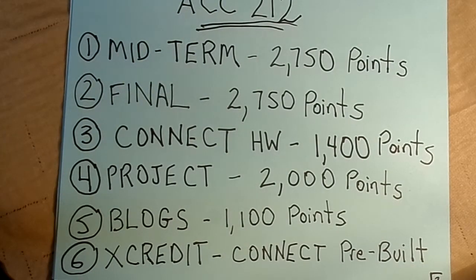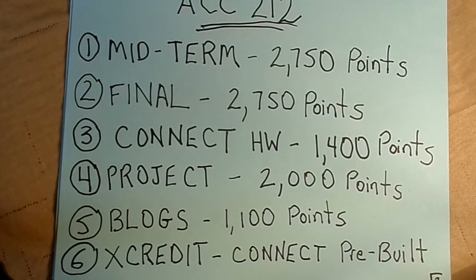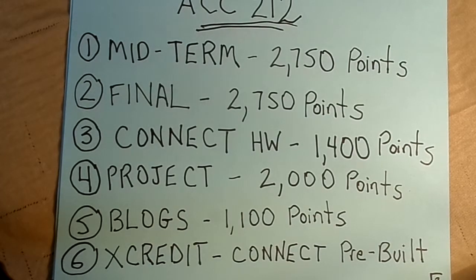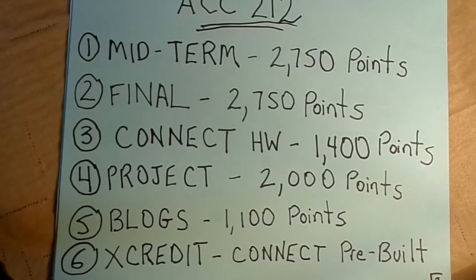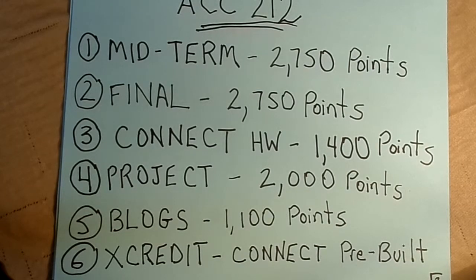Here's what the grades come from: the midterm exam is worth 2,750 points, the final exam is worth 2,750 points, and the Connect homework — a chapter-by-chapter assignment, sometimes two per week — adds up to 1,200 points. There's also 100 points for introducing yourself to the class on a discussion board in the first week, and another 100 points for posting that you understand and agree to the syllabus.